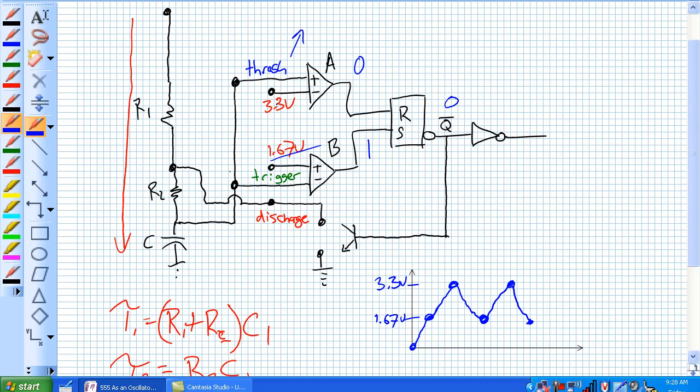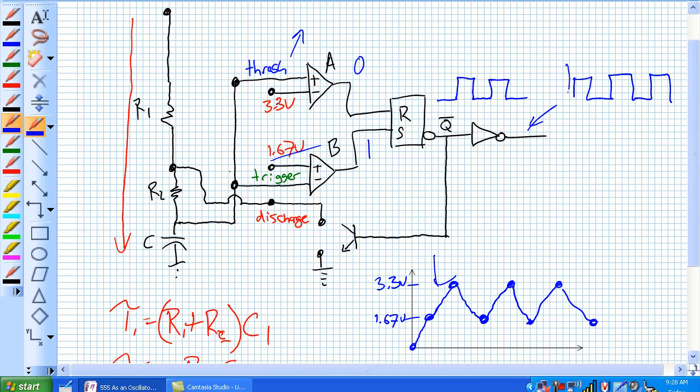It starts charging up to 3.3 volts, 1.67, and you can loop this tape back to where I started. So, what you get is this continual oscillating capacitor input, but since these are digital pulses, as we showed, it goes from 0 to 1, 0, 1, 0, 1. What's the output here? Well, it's the inversion of that, and you get a stable oscillating signal.